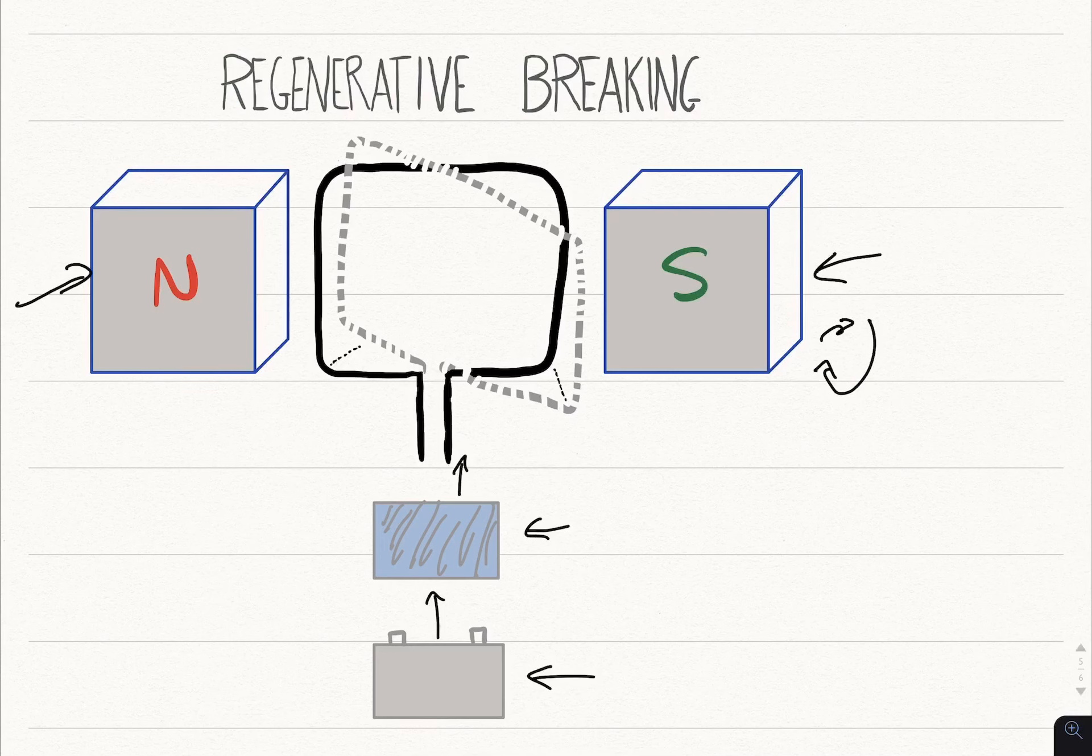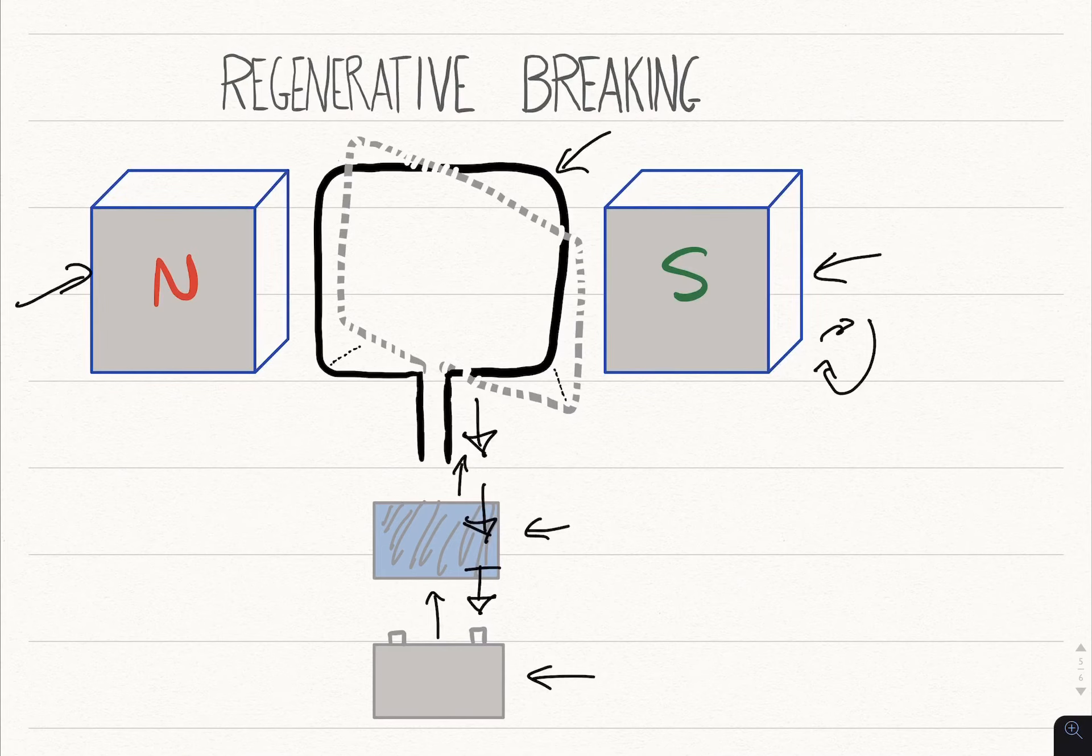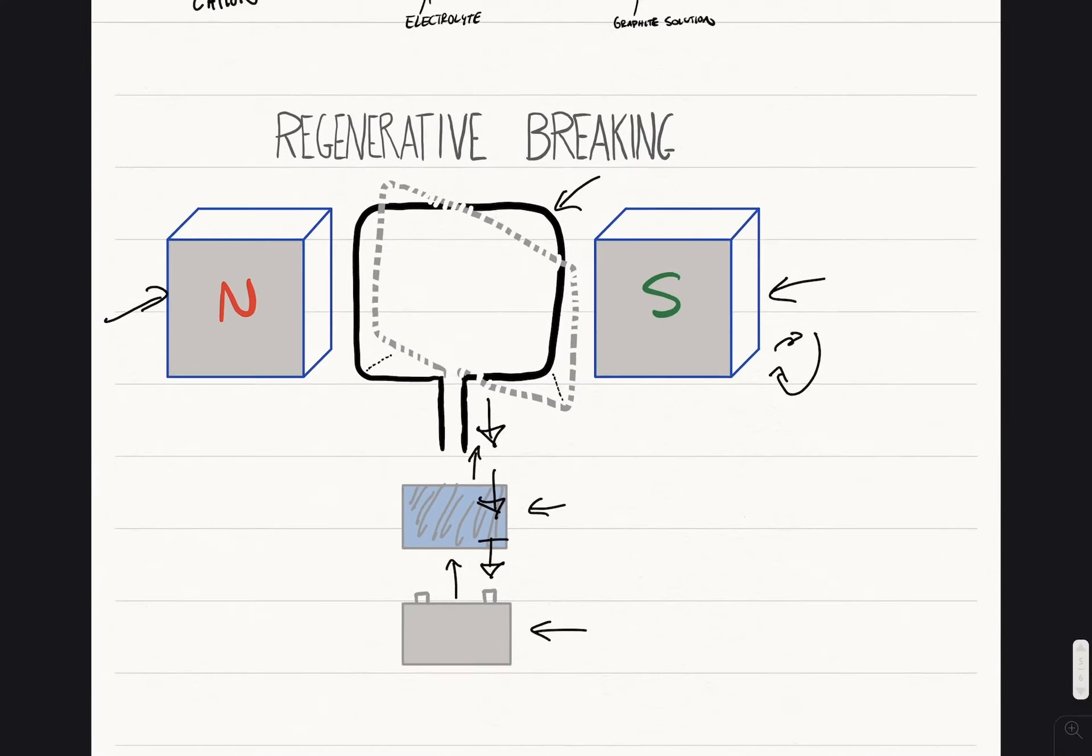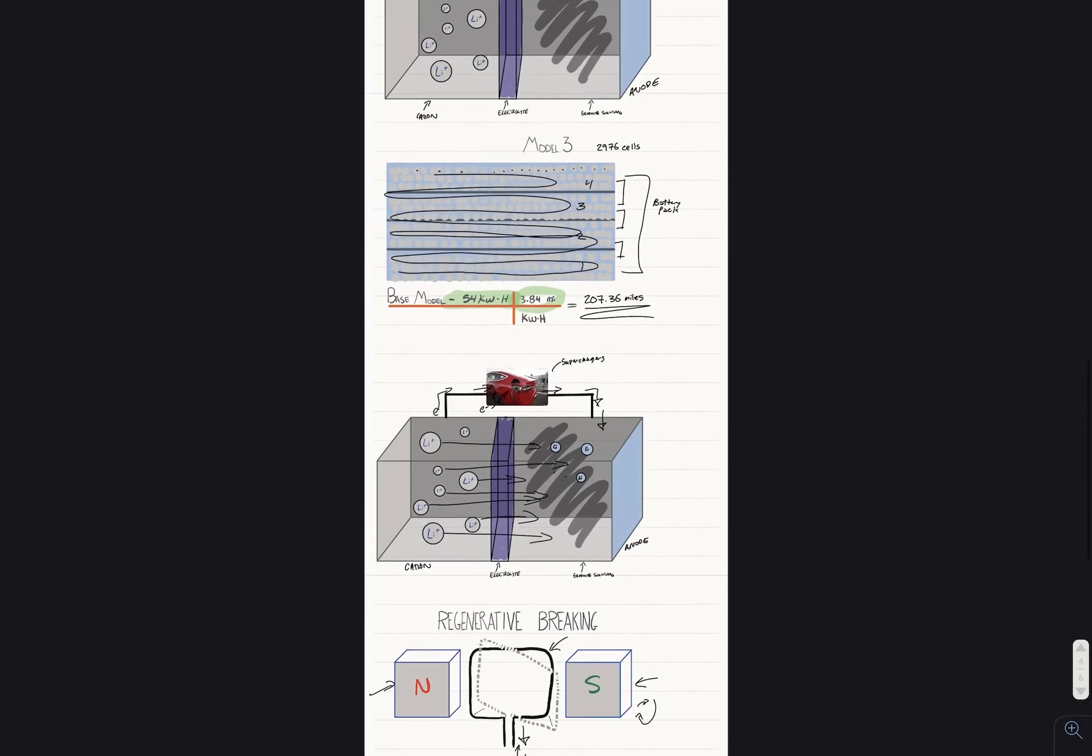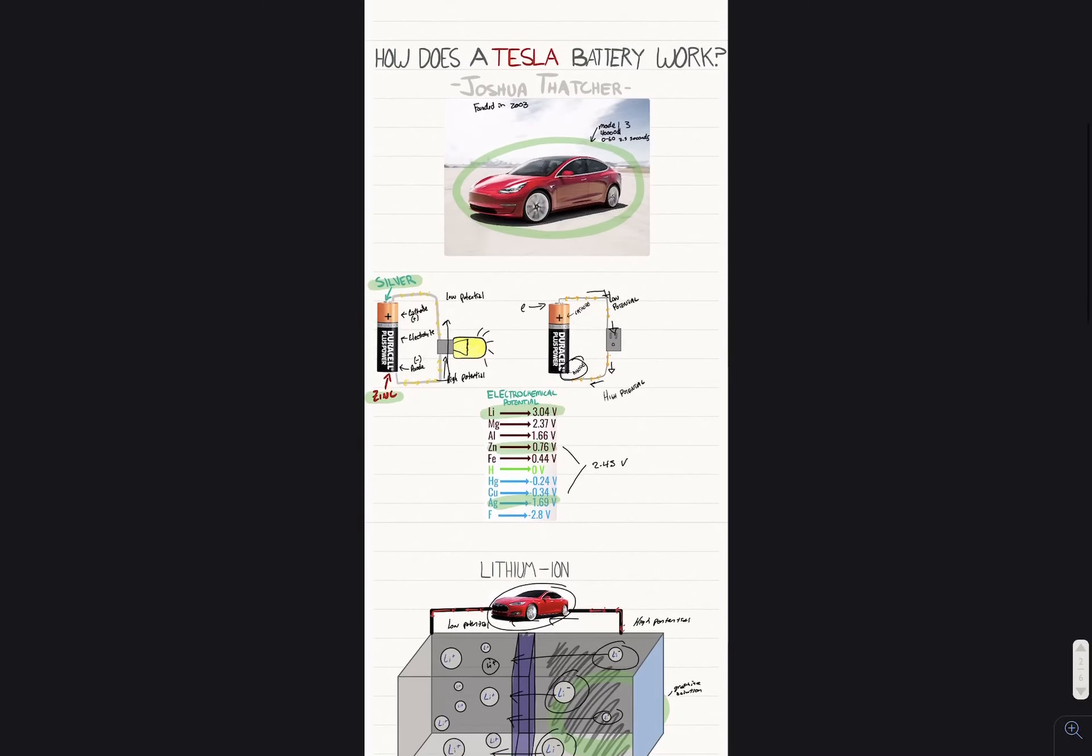It's going to therefore put current and charges back into the battery. So that's how regenerative braking works. And in essence, that's how a Tesla car battery works. Pretty amazing vehicle.